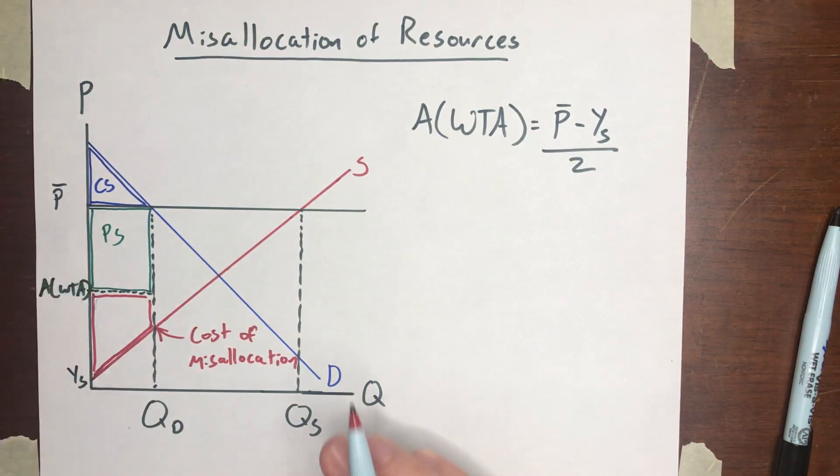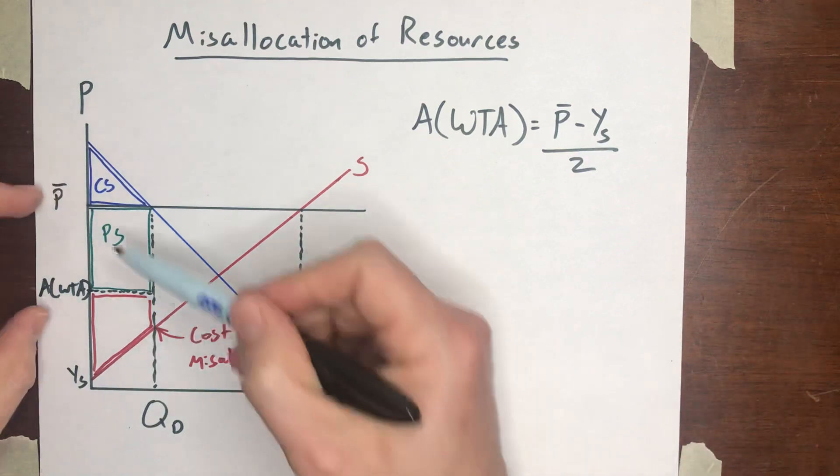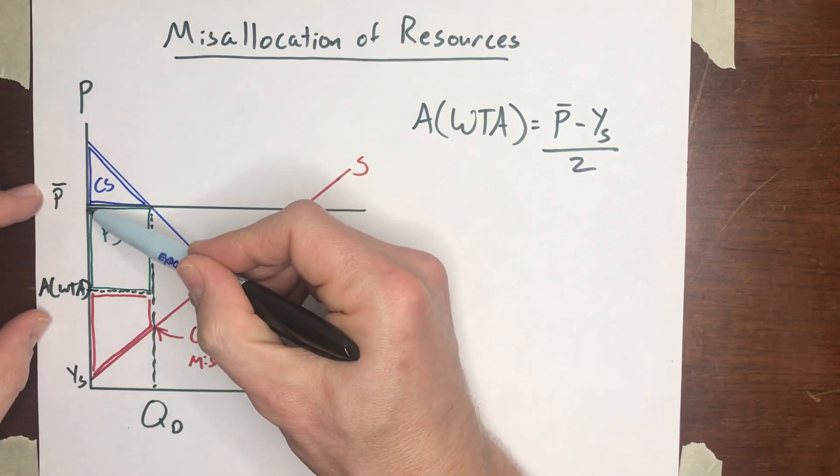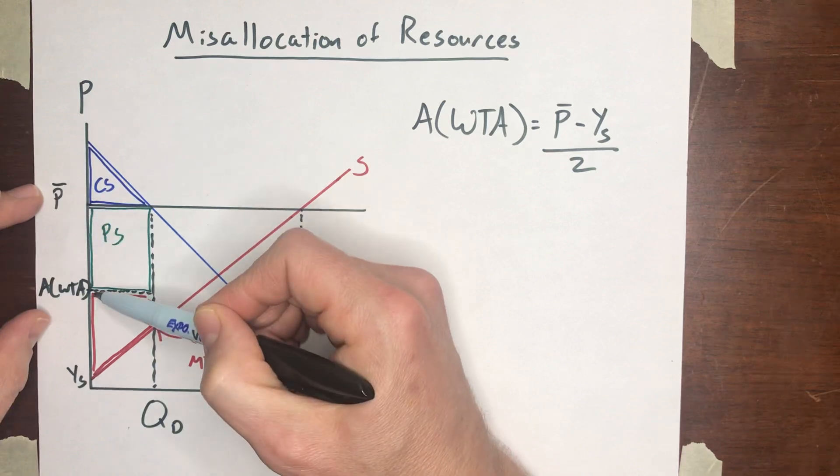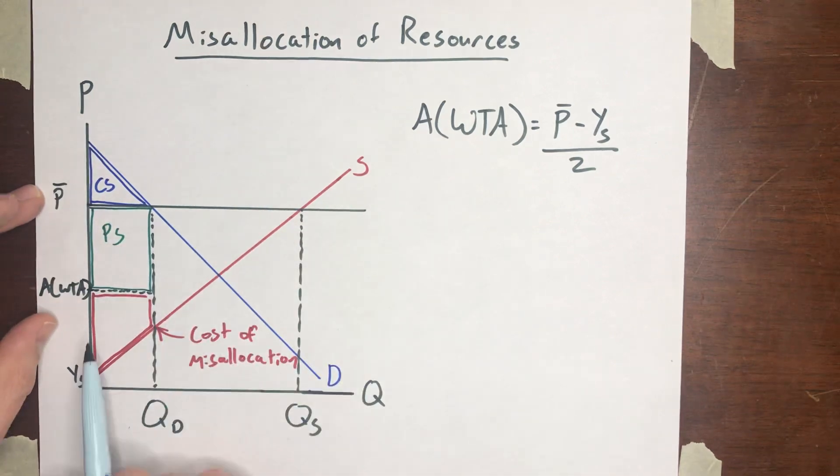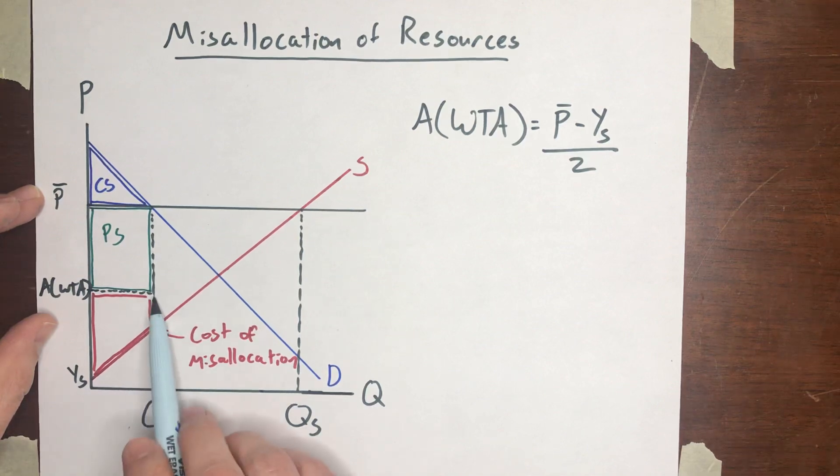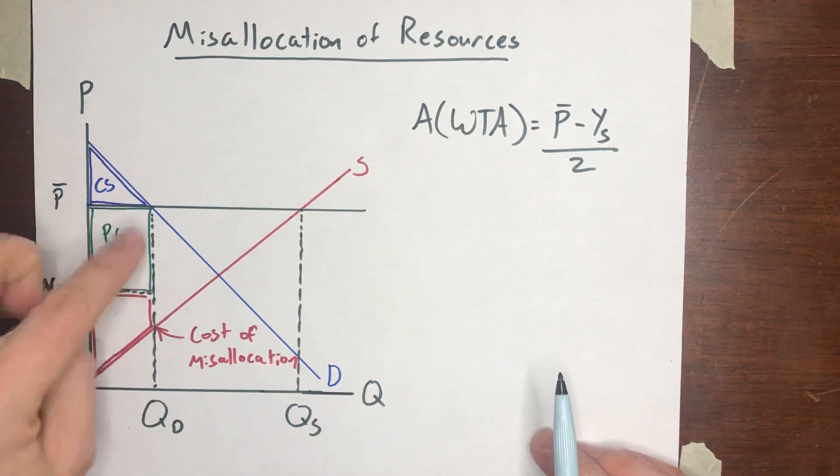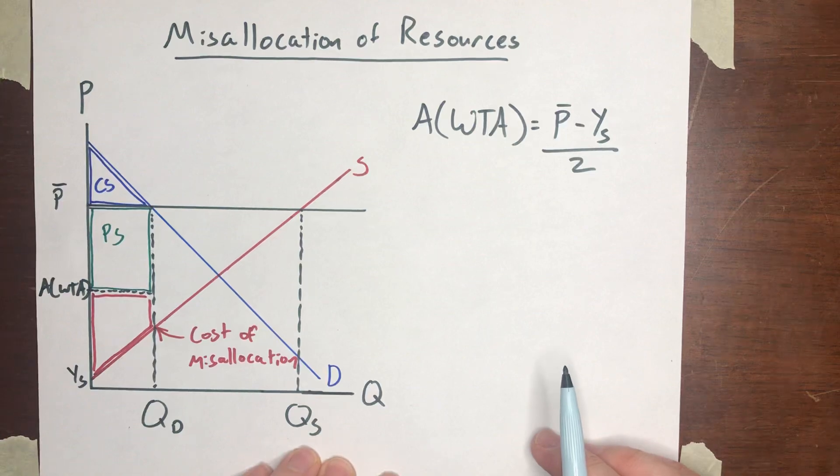How do we calculate the area of this producer surplus? Well, that's going to be pretty straightforward. We just need to find the height, which would be the distance between P̄ and the average willingness to accept, and you'd multiply that by QD, the quantity of units that buyers demand, which is the number of transactions that will actually occur in this market.